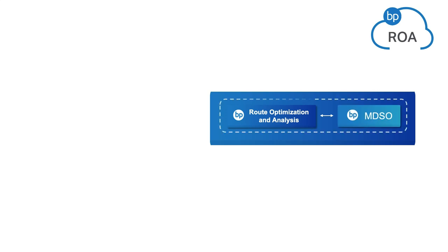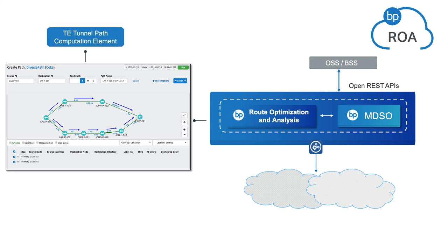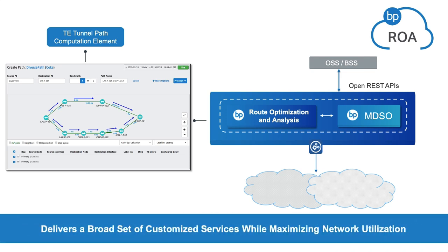Through the combination of ROA and MDSO, the Blue Planet portfolio can automate the provisioning of wave services, layer 2 Ethernet, IP VPNs and MPLS TE tunnels. By integrating the shared risk link groups, SRLG, from transport networks with higher level network topology, MPLS TE tunnels can be designed to provide physical layer resiliency along with a full set of IP MPLS and performance-based constraints. This combination enables the delivery of a broad set of customised services, while maximising network utilisation by taking advantage of diverse paths for high availability, high performance and best effort services.